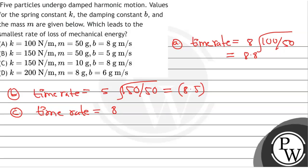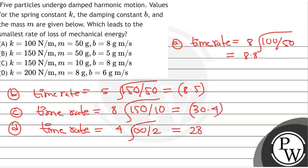For part C, 8 times the square root of 150 over 10, this equals 30.4. Now for part D, the rate is equal to 6 times the square root of 200 over 8.